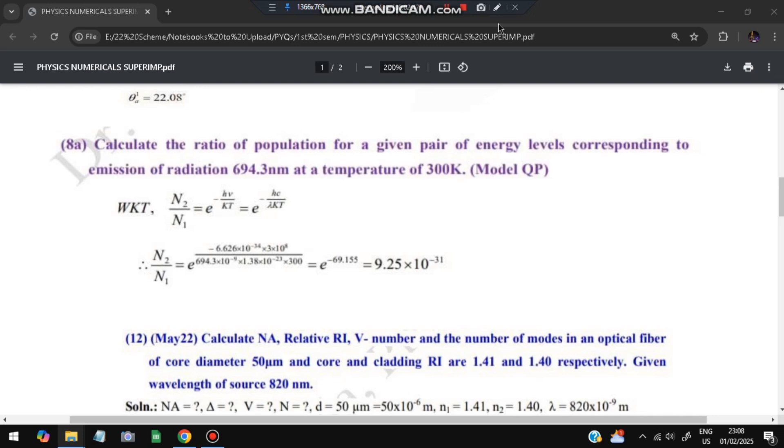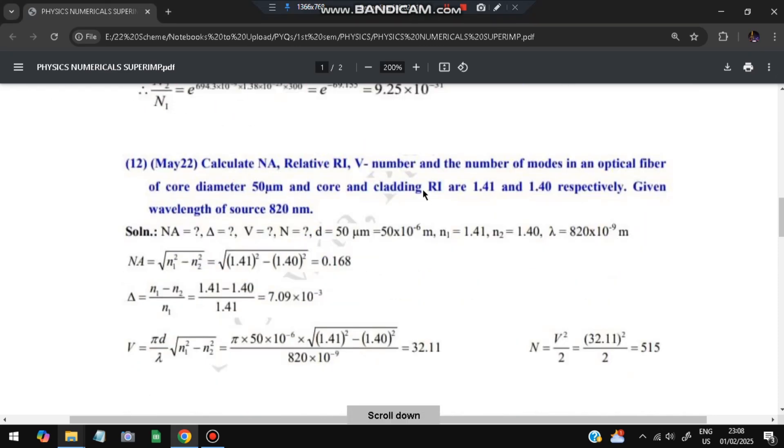Another type of question which they can ask is related to fiber optics: calculate the numerical aperture, relative refractive index, V number, and the number of modes in an optical fiber. Core diameter is given as 50 nanometers and core cladding RI is 1.41 and 1.40. The wavelength is 820 nanometers. We'll write down everything we need to find and whatever is given to us.